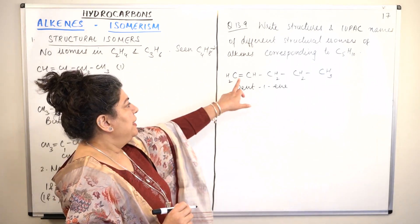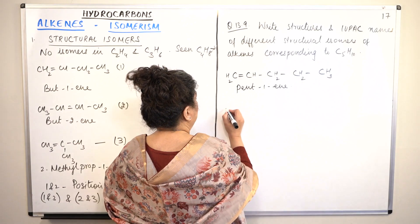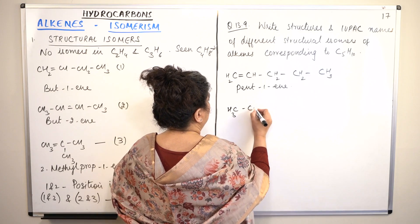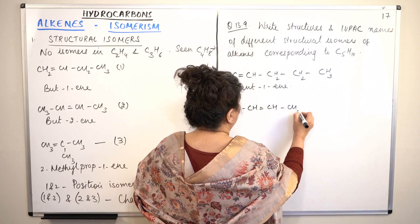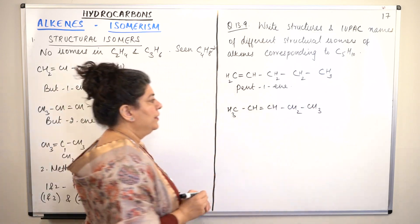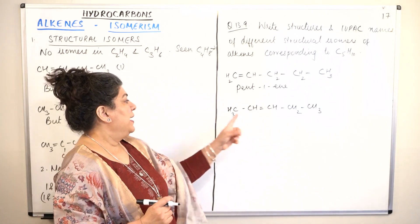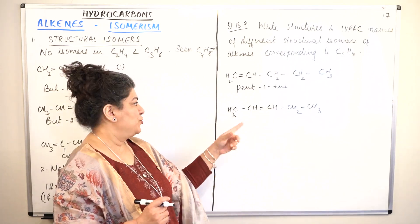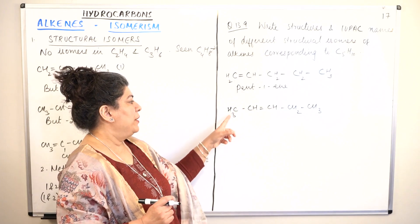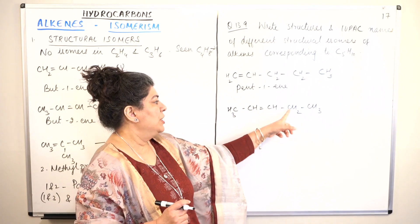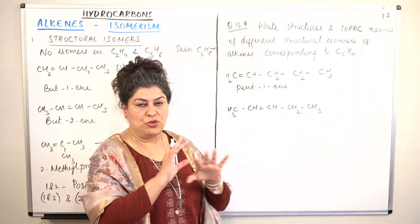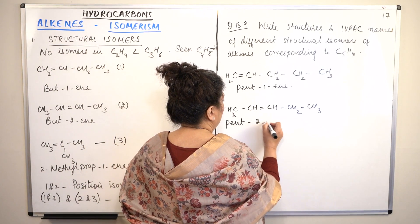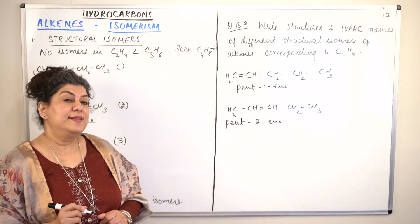For the second isomer, we shift the double bond between the second and third carbon: CH3-CH=CH-CH2-CH3. Filling in the hydrogens — three on the first carbon, one each on carbons 2 and 3, two on carbon 4, three on carbon 5 — and this is pent-2-ene.